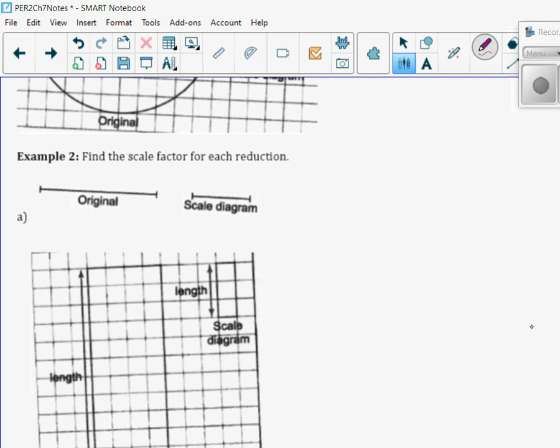If I took a ruler and measured this, I would get 3.7 centimeters. If I measure this, I get 1.8 centimeters. Scale factor is equal to the reduction or enlargement, in this case it's a reduction, 1.8 centimeters divided by 3.7 centimeters. Notice the centimeters cancel. We're left with approximately 0.5 if I rounded. So that's half the amount.